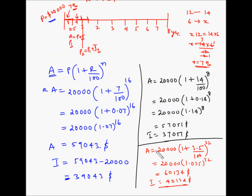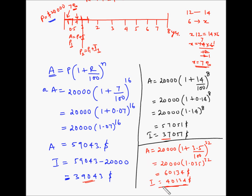Comparing all three: annual compounding gives interest of $37,051; semi-annual gives $39,043; and quarterly gives $40,134. So with the same principal, rate, and time period, as you increase the number of compounding periods, you earn more interest.